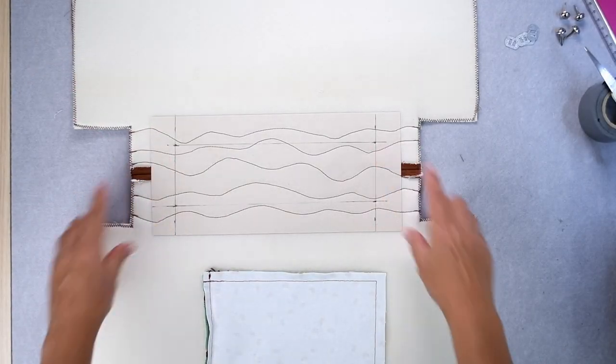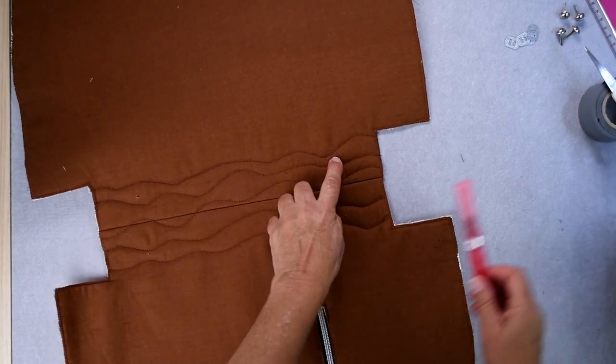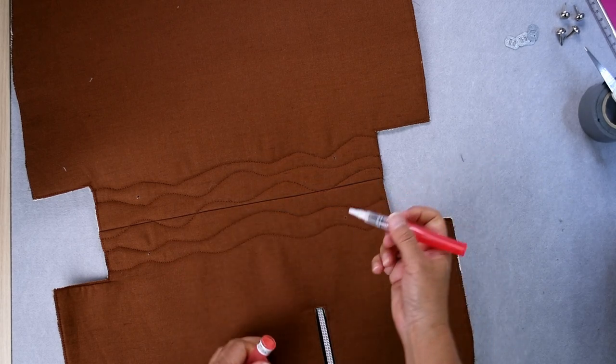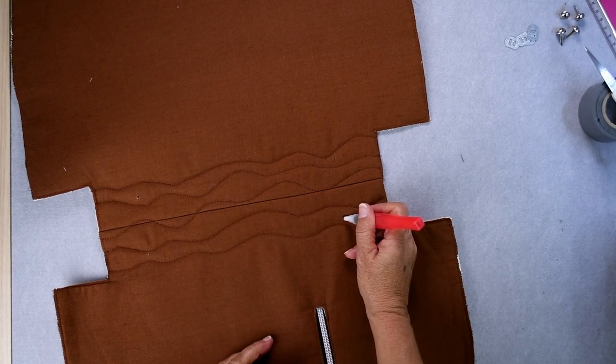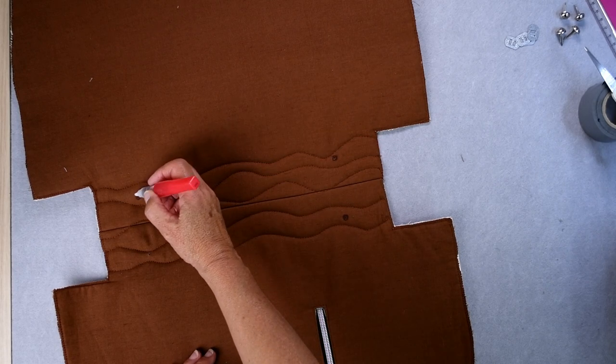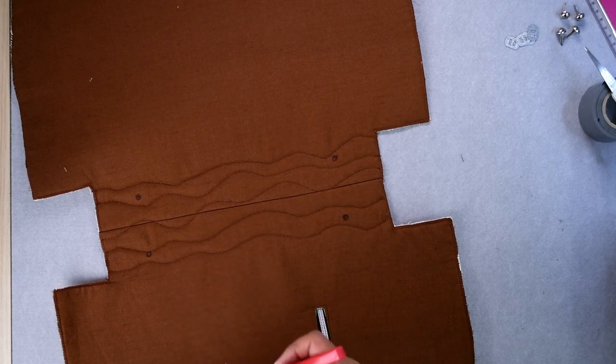Now that we have our holes punched, we need to put some fray stopper on our fabric. This is a fray stopper pen. You might just have some in a bottle, just like that.